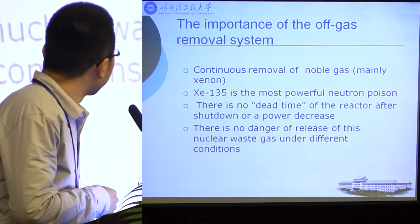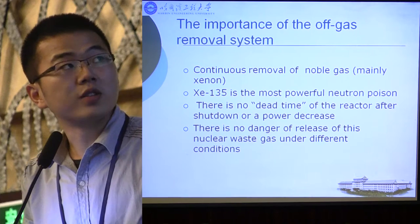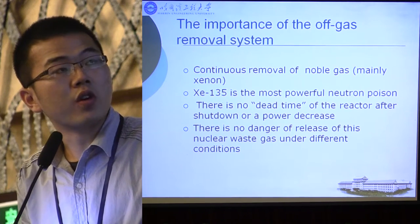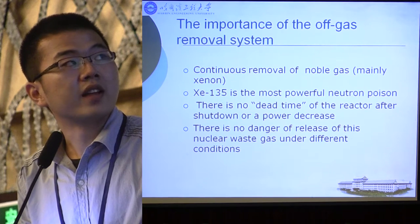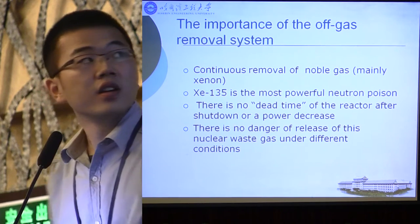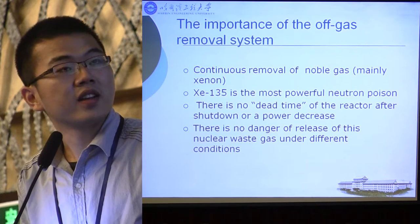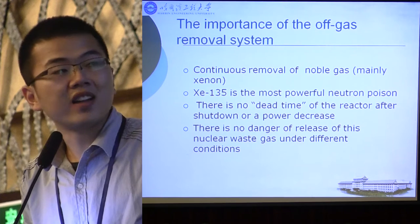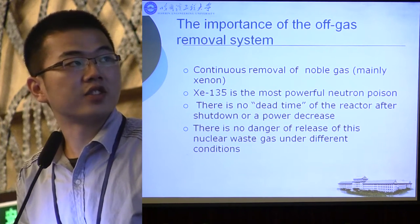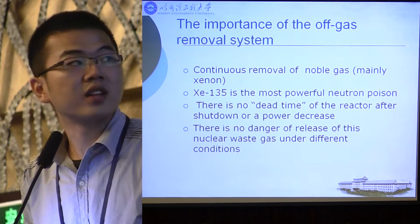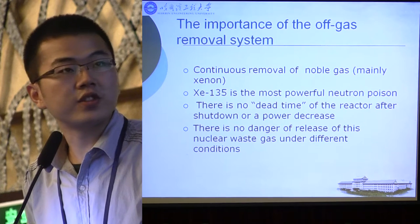Online processing can be a great advantage of the MSR designs. It allows for continuous removal of some of the most powerful neutron poisons, like xenon and krypton. Removing xenon-135 makes the reactor safer and easier to restart. That means there is no dead time of the reactor after shutdown or power decrease, and there is no danger of release of these nuclear waste gases under different conditions.